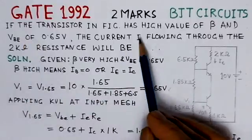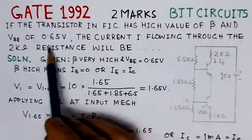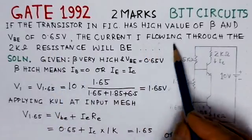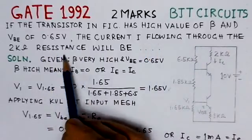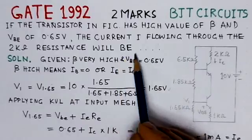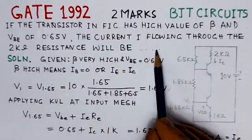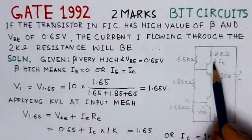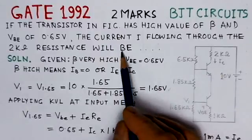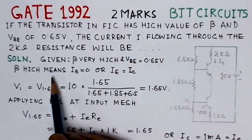If the transistor in the figure has a high value of beta and VBE is 0.65 volts, the current I flowing through the 2 kΩ resistor will be—here we need to find the value of the current in the given circuit. There are no 4 options, only the value is to be found.